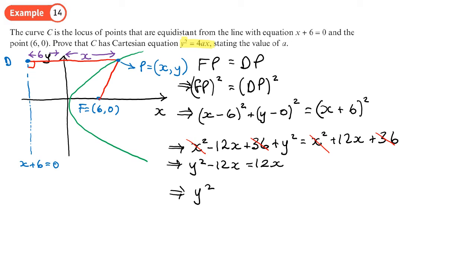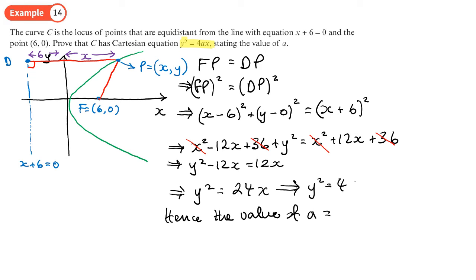That gives us y squared equals 24x. We can write this as y squared equals 4 times 6 times x, so the value of a is 6. This confirms the Cartesian equation. We used the fact that the distances, or distances squared, are equal to derive the equation.